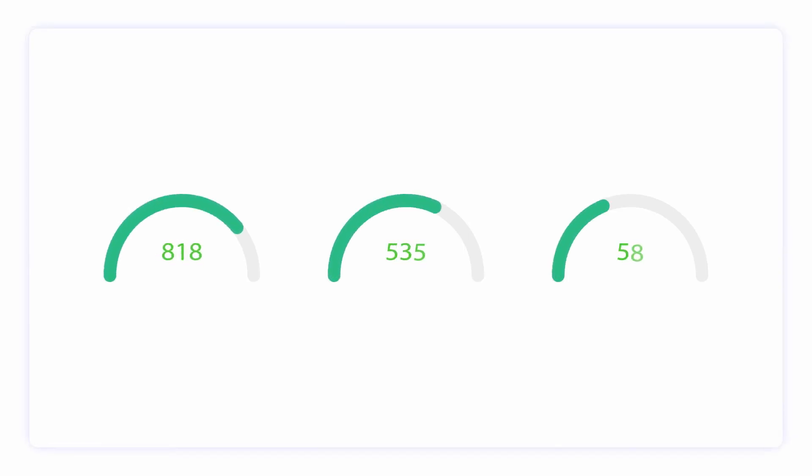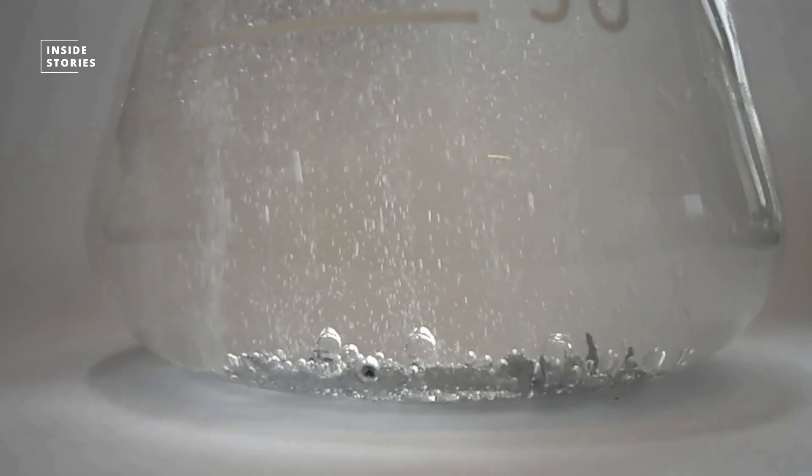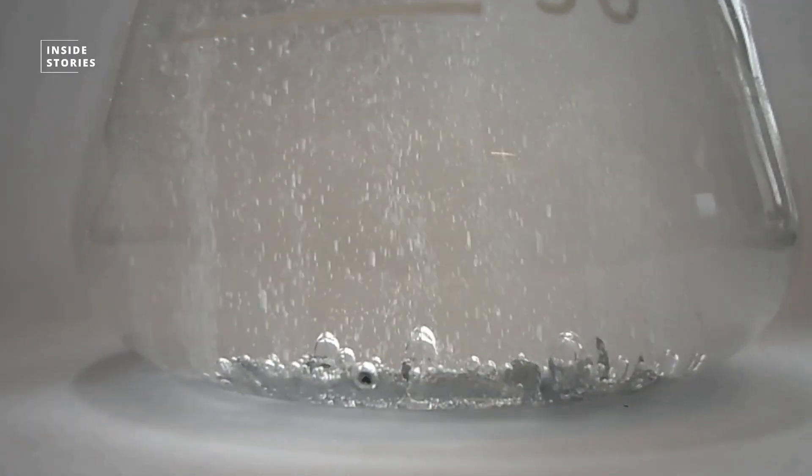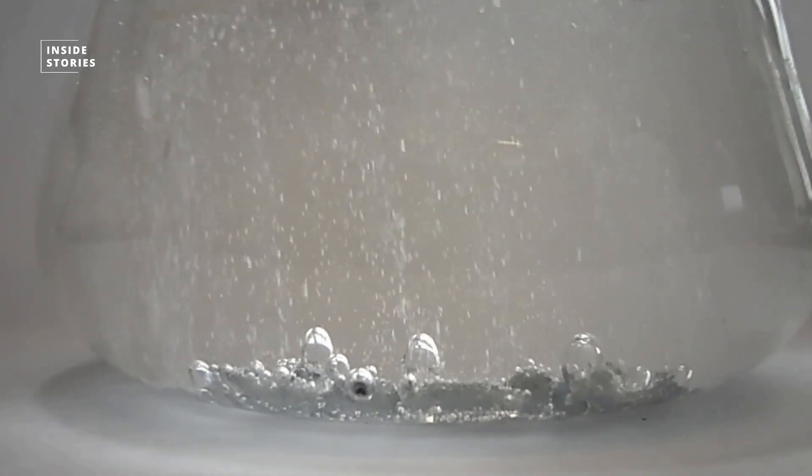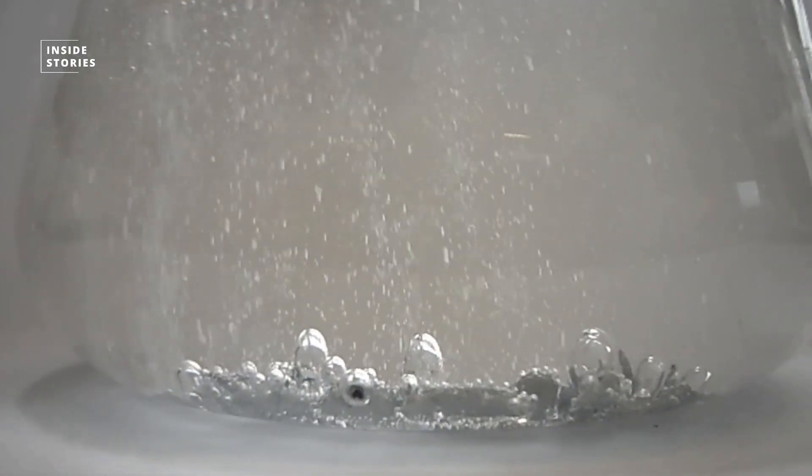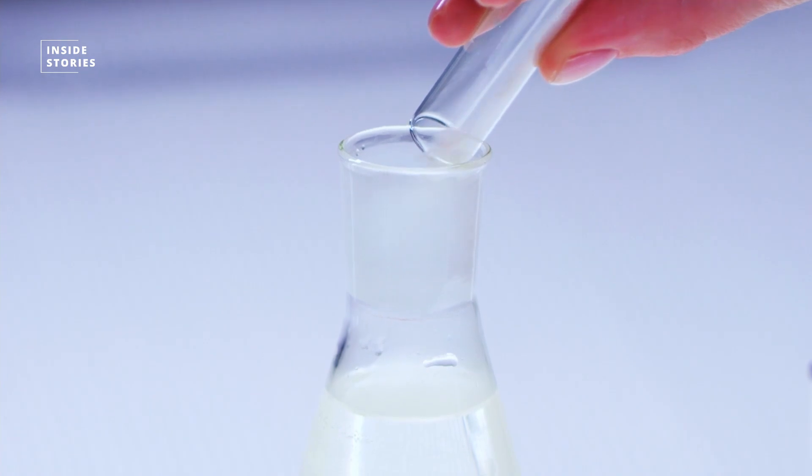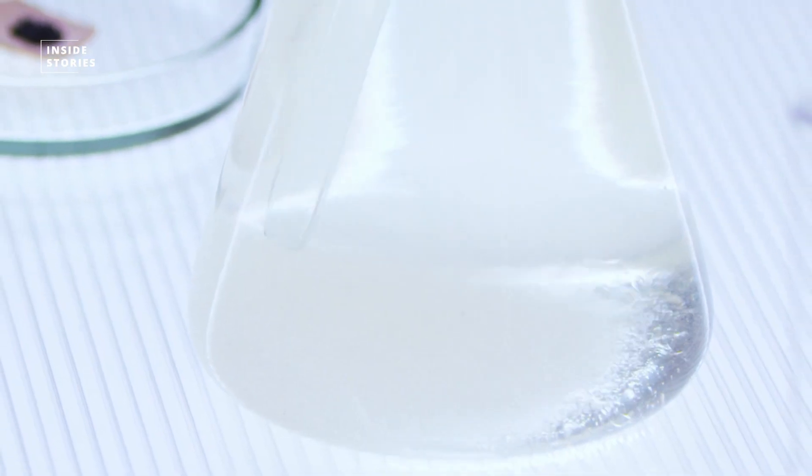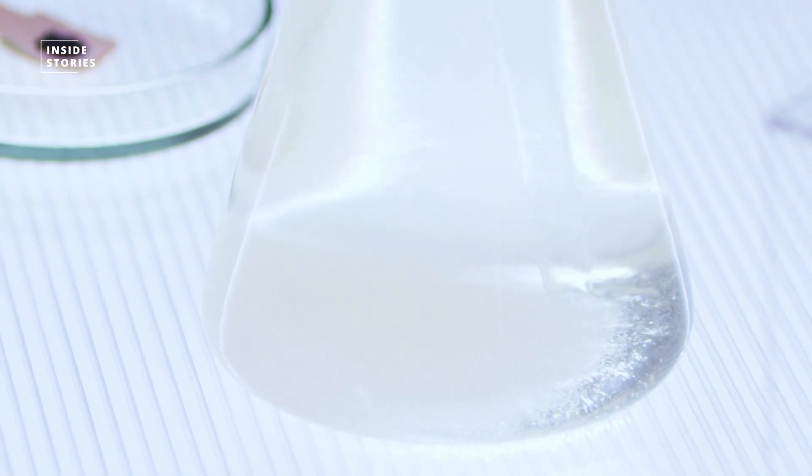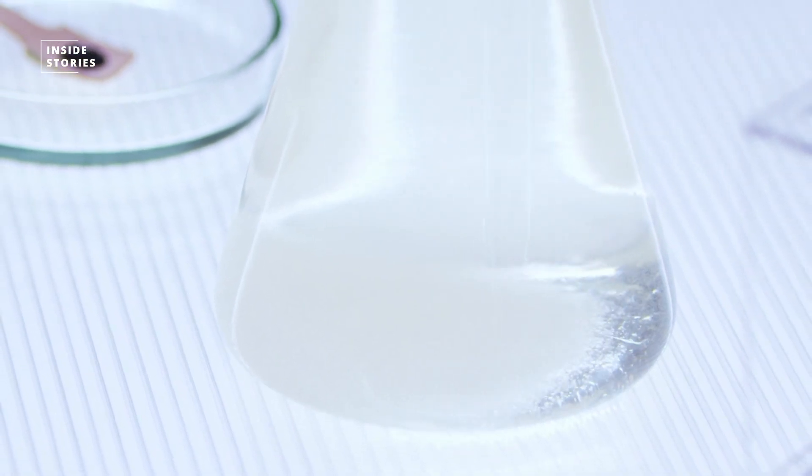But zinc ion batteries have a weakness. They usually can't be charged many times and perform poorly, because water is used as a conductor for the ions inside of them, which corrodes the zinc and forms deposits on the anode that interfere with the battery's function. That's why researchers investigated chitosan, whose molecules bond well with water, which means fewer water molecules should be available to corrode the zinc.